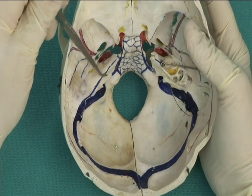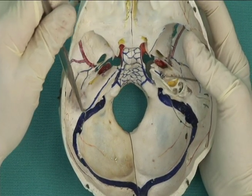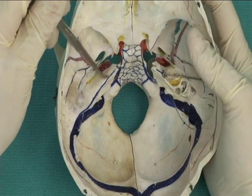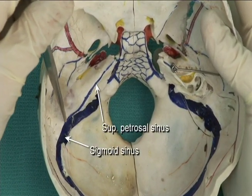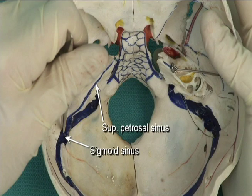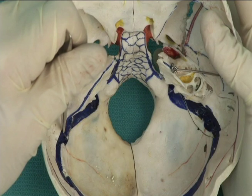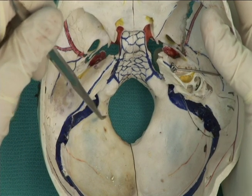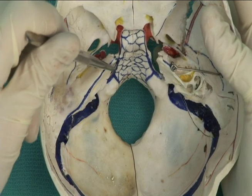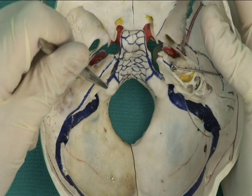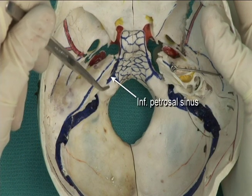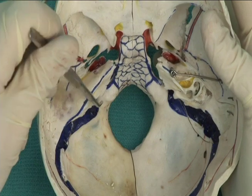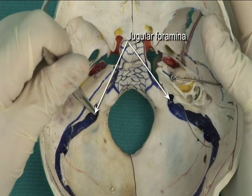The superior petrosal sinus runs along the superior aspect of the petrous ridge and drains to the sigmoid sinus, while the inferior petrosal sinus can be found at the posterior base of the ridge and drains to the jugular foramen.